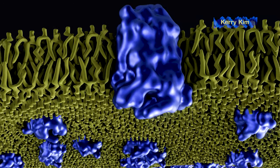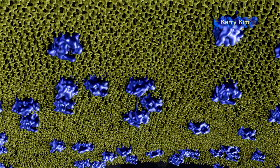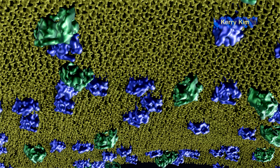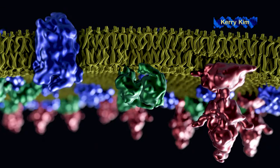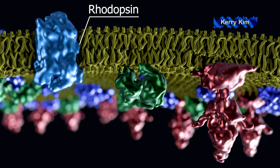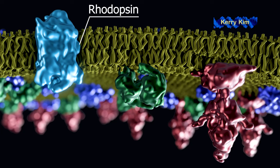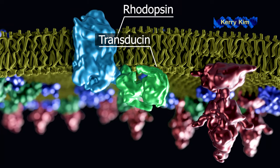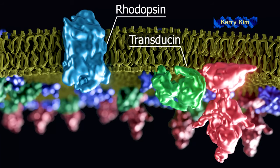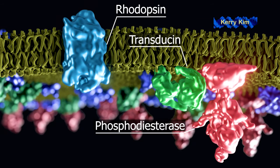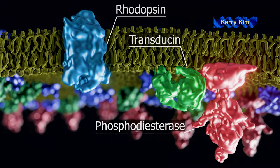In addition to rhodopsin, there are two other important proteins in the disc membranes, transducin and phosphodiesterase. After a photon activates a rhodopsin, the rhodopsin will activate transducin proteins it encounters. The activated transducin, in turn, will bind to and activate phosphodiesterase. Effectively, transducin is an intermediary between rhodopsin and phosphodiesterase. Having this chain of activation allows for amplification. Here's how.